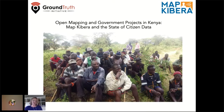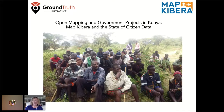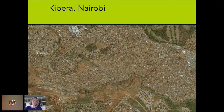This picture is a participatory budgeting meeting in rural Kenya, and I'll be referencing that a little bit later. But first, I'm going to give some background on what is Map Kibera. This is aerial imagery, satellite imagery of Kibera, which is a slum area in Nairobi in Kenya.